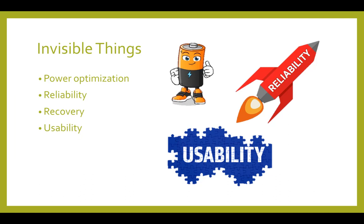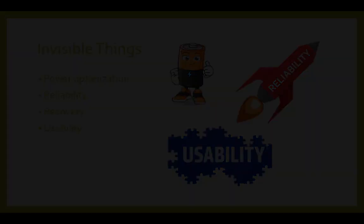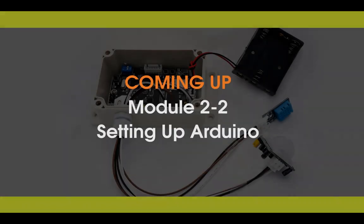In real life, this could be adding an LCD to display status, making the SD card more accessible, or having indicator LEDs to flash a status. In this sub-module, we learned the basic components of what a data logger is. In the next sub-module, we'll be installing and configuring the Arduino design environment. Stay tuned for Module 2-2, Setting up Arduino.